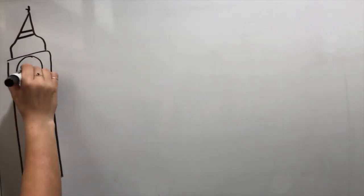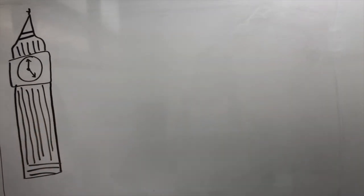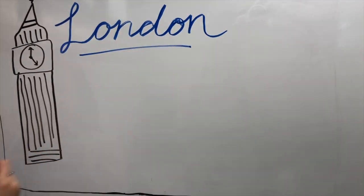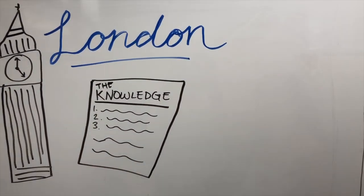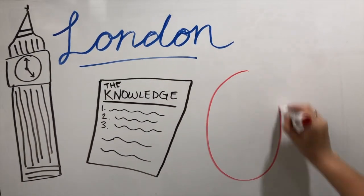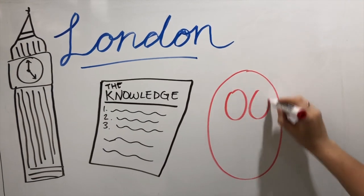In London, all taxi drivers must pass a rigorous memory test known as the knowledge to become certified. To pass the test, aspiring drivers must memorize 320 routes, 25,000 streets, and 20,000 landmarks all across London.